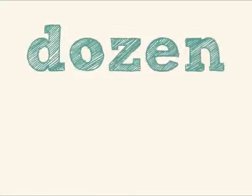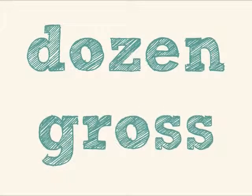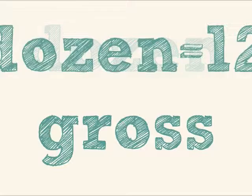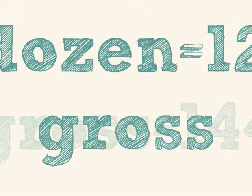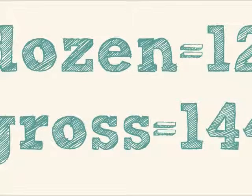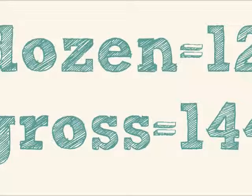We have certain words that represent a counted number, like a dozen or gross. You learn that a dozen means 12, and a gross means 144. So when someone asks for a dozen donuts or a dozen roses, you think, oh, they want 12. Or if you order a gross of pencils, you know you'll get 144.